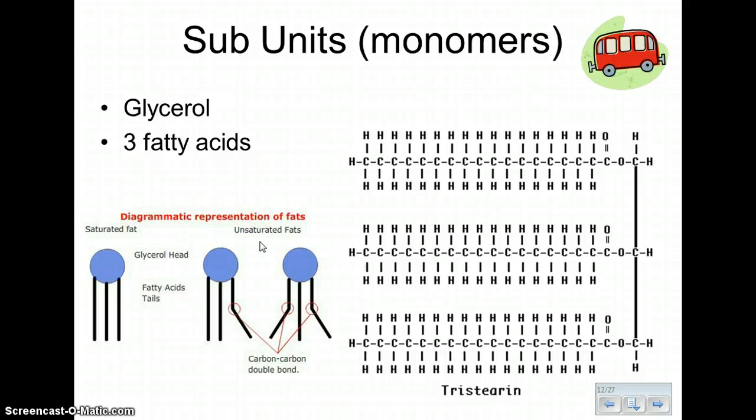Moving on to the subunits, fat molecules are made of one glycerol molecule and three fatty acids. We often diagram this with the glycerol as the head of the molecule and the fatty acids as the tails. If we look at this, this is a molecule of a fat, and the reason it has so many calories is there's so many little bonds to break. Every time you break a little chemical bond, you release some energy. So again, it has a lot of calories because it has a lot of bonds to break.